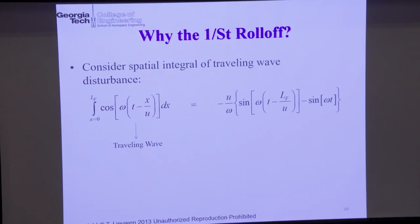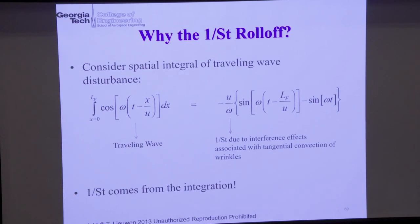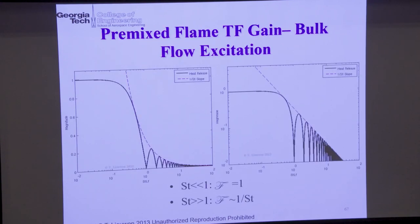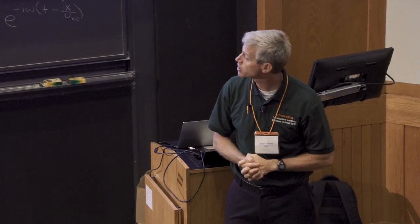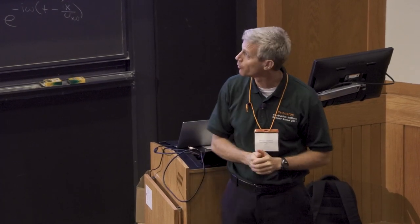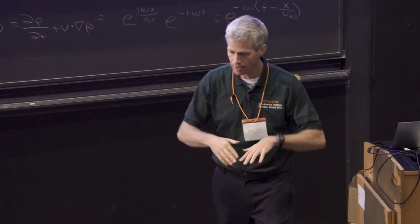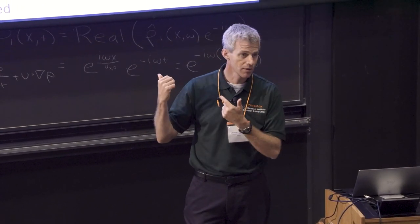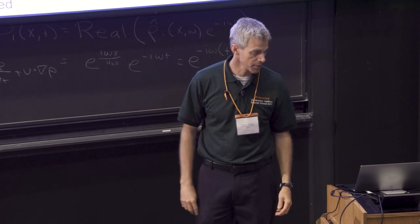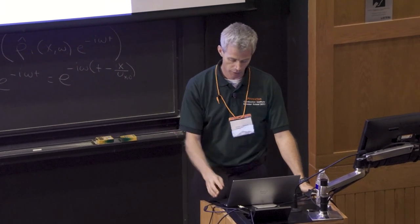Rather, the reason the heat release has one on F is because of convection — tangential convection of flame wrinkles drives this. Imagine the flame area has constant amplitude but is a traveling wave moving along the flame as cosine(ωt − x/U). Integrating that from zero to LF, you get a one on ω factor out of there. The one on Strouhal number comes from the combination of two factors: you have wrinkles on the flame that are convecting, and then you're integrating over them — getting cancellations. Even though locally the magnitude of heat release fluctuations isn't changing with frequency, as you integrate over the whole flame you get this low-pass filter characteristic. This is one more example of why the non-local, wrinkle-convecting nature of premixed flames drives their high-frequency behavior.